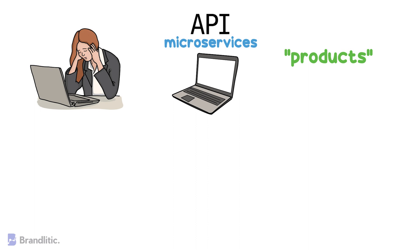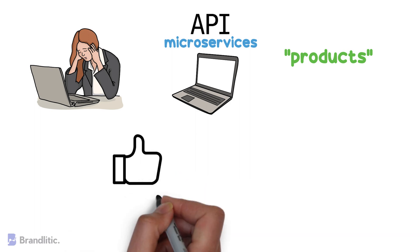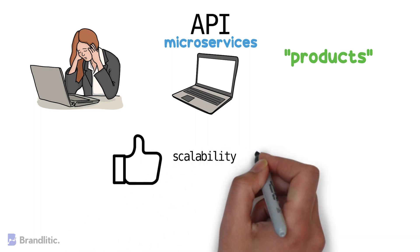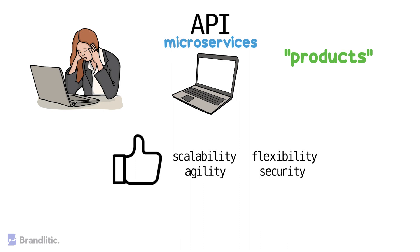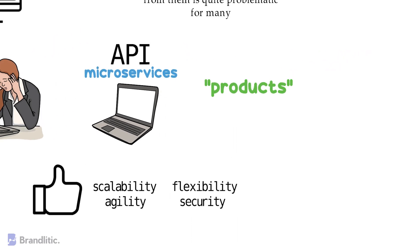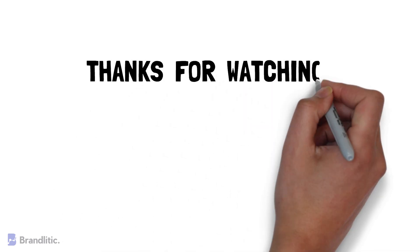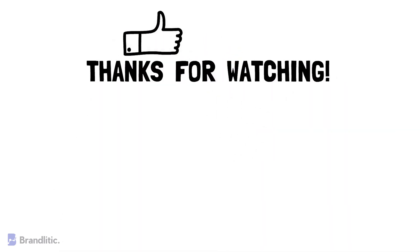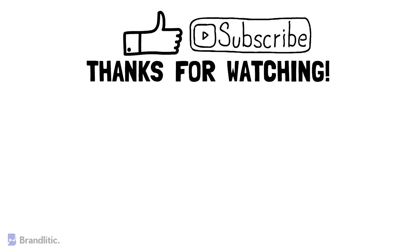As a conclusion, both microservices and APIs are used in software development and both offer an organization plenty of benefits such as scalability, flexibility, agility, and security, while producing high-quality software. I hope this video was helpful. If you love my content, feel free to smash that like button, and if you haven't already subscribed to my channel, please do — it keeps me motivated and helps me create more content like this for you.